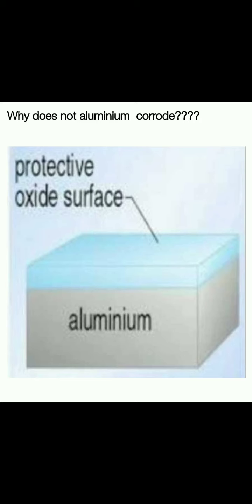Aluminum is very reactive. But when it comes in contact with air, an outer layer of aluminum oxide forms on the surface. This thin layer of aluminum oxide that has been deposited actually protects the aluminum metal underneath. Because of this layer, aluminum will not come into further contact with oxygen and corrosion will be prevented.